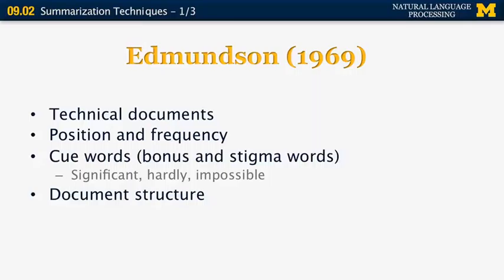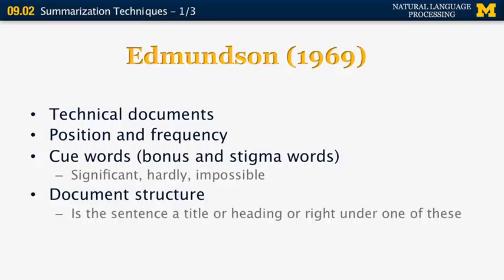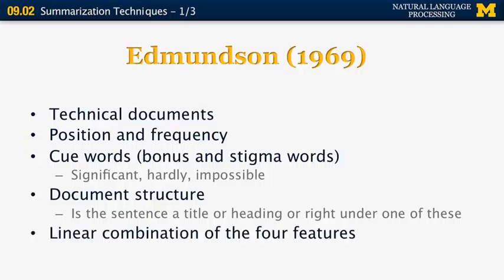Edmondson also uses document structure as a feature — for example, whether the sentence is a title or heading of a section, or the first sentence of a specific section or subsection. He combines those four categories of features using a linear combination to pick the most important sentences.